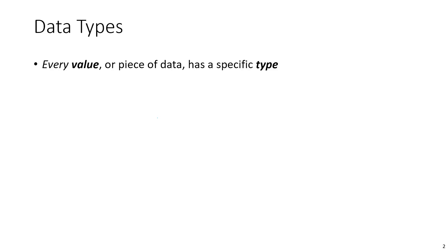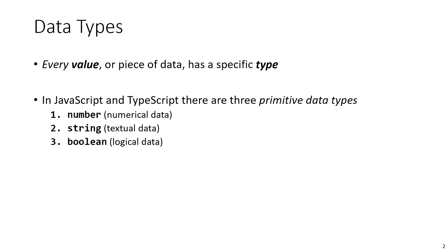Every value in our program, every piece of data, is going to have a specific type associated with it. Fundamentally there are three very basic types. The first is number, for working with numerical data. The second is string, a funny name but this is for working with textual data. And finally we have something called a boolean, which is for working with logical true-false data.